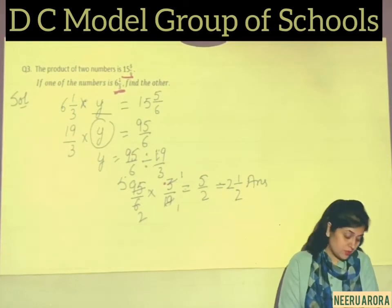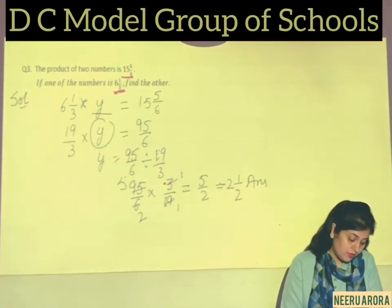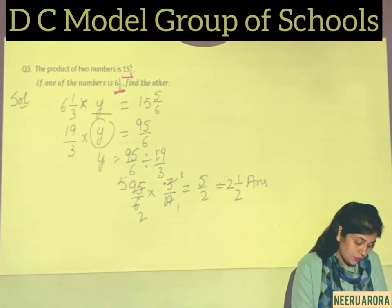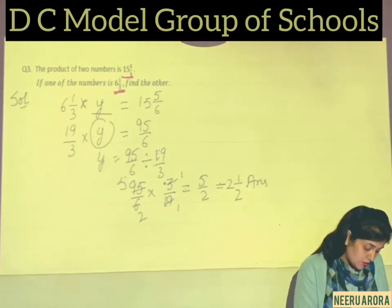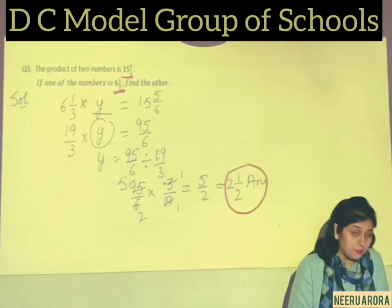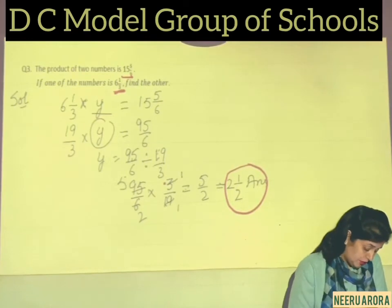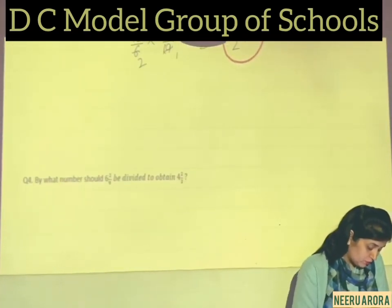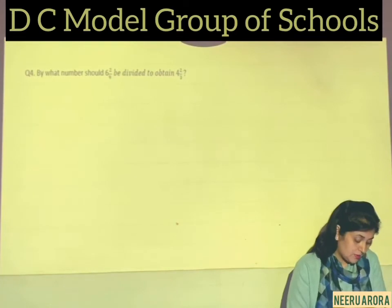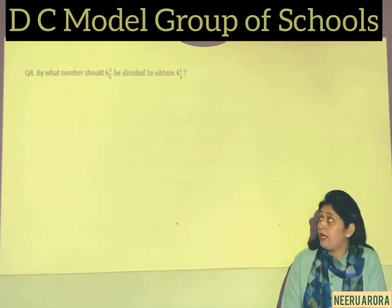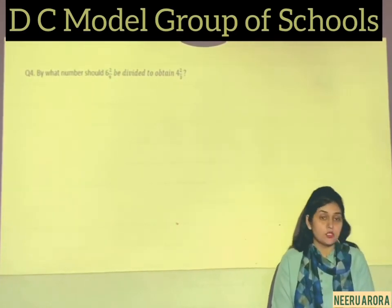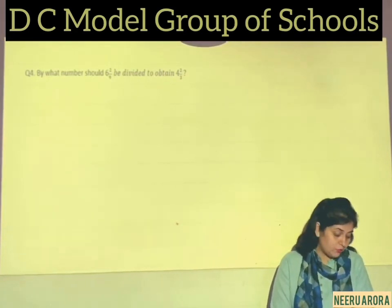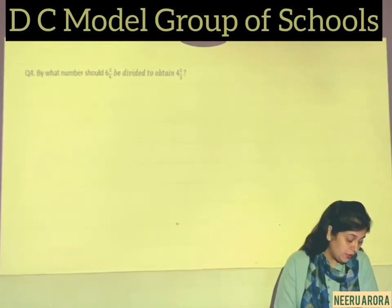So the product of the two numbers is 15 5/6, and if one number is 6 1/3, the other number is 2 1/2. Now let's come to the 4th word problem: by what number should 6 2/9 be divided to obtain 4 2/3?